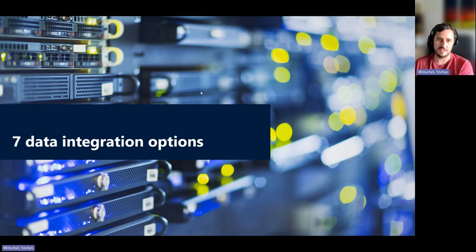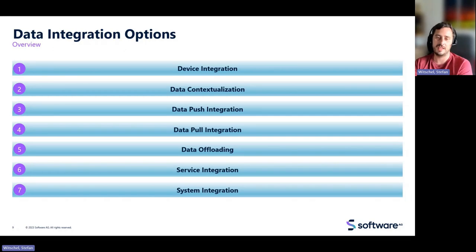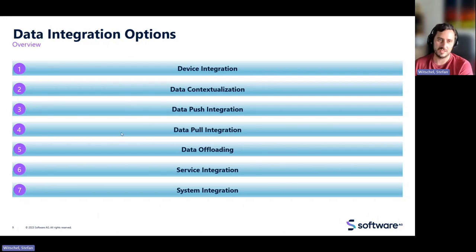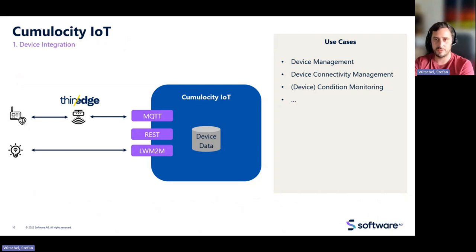Now let's talk about the seven data integration options in Cumulocity IoT. I collected seven and tried to name them meaningfully. I will go through each one, explain them, give example use cases, and provide pros and cons of each integration.